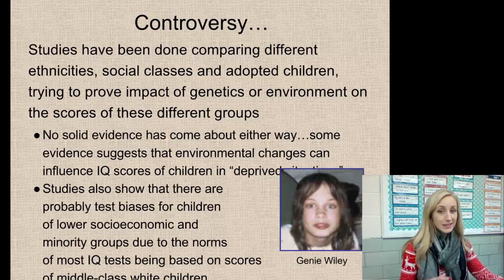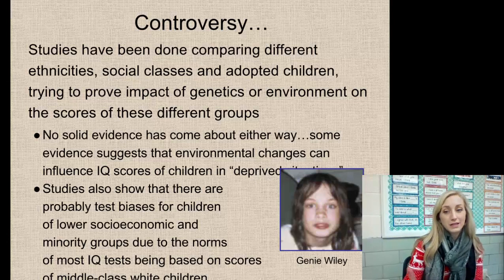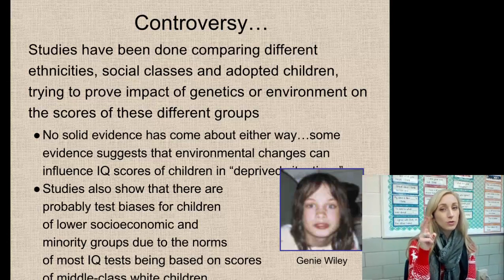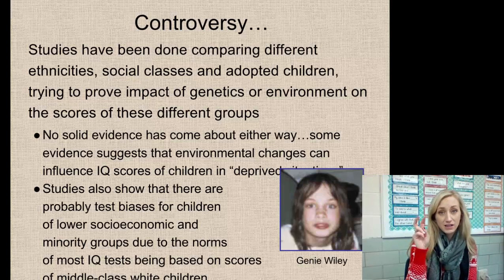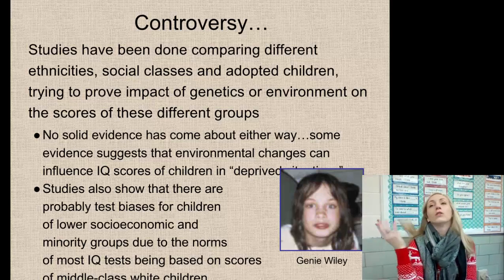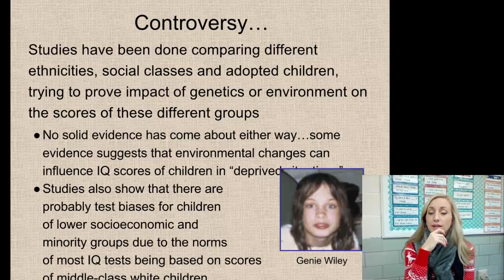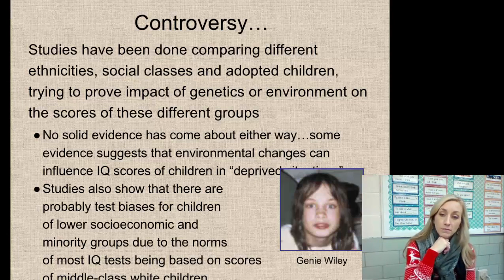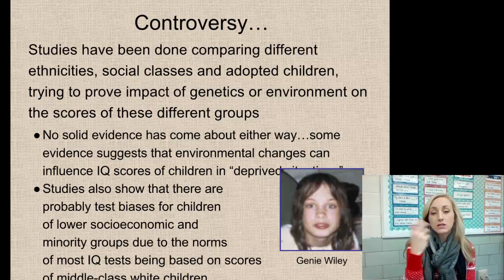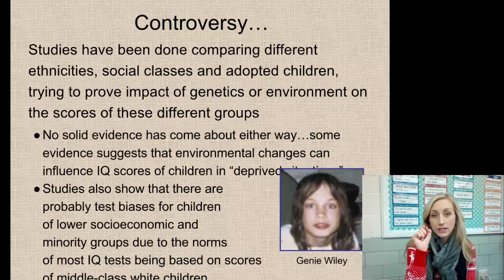Studies show probable test biases for children of lower socioeconomic and minority groups, since most IQ test norms are based on middle-class white children. The people creating those tests embed their own norms in the questions — for example, someone from a low socioeconomic background may not know what a yacht is, yet be asked to calculate its length. The case of Genie Wiley, a child found at age 13 who had been locked in her room since infancy and could barely walk or speak, raised the question of whether her limitations were genetic or due to her severely deprived environment.